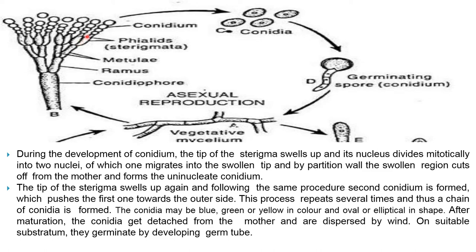By partitioning of the wall, the swollen region cuts off from the mother and forms a uninucleated conidium. The tip of the sterigma swells up again and following the same procedure a second conidium is formed, which pushes the first one towards the outer side. This process is repeated several times and thus a chain of conidia is formed. The conidia may be blue, green, or yellow in color and oval or elliptical in shape.